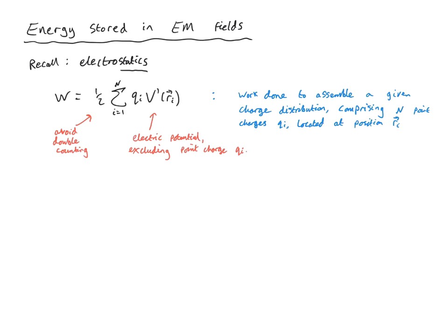What do I mean by double counting? If we imagine the energy required to bring a pair of charges together — fixing one charge in space and bringing the other from infinity — the energy contribution is qᵢ times the potential due to the first charge at position rᵢ. Because there are two particles, we don't want to count that interaction twice by summing over both the first-to-second and second-to-first interaction, because that's the same thing. So we have a sum over all n particles, but the interaction is only pairwise, and hence a factor of one half out front.